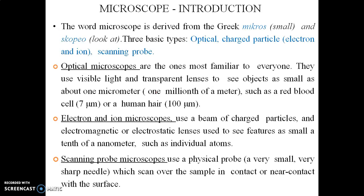Hi all, I am Ashwin. Today we are going to discuss Module 6, mainly on optical microscopes or light microscopes. The word microscope is derived from the Greek word 'micros' meaning small and 'scope' meaning to look at. The three main types of microscopes are optical type, charged particle or electron and ion type, and scanning probe type.